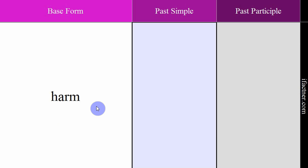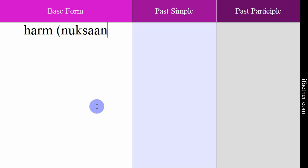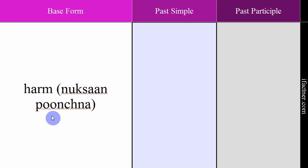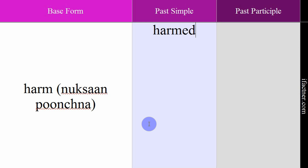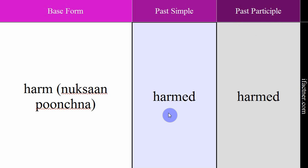The next verb is 'harm', meaning nuksaan puncha na — to harm or cause damage. Example: 'He harms animals.' — Woh janweron ko nuksaan punchata hai. Past simple form: harmed. Past participle form: harmed. Past simple: 'The thieves harmed the citizen.' — Choron ne shehri ko nuksaan puncha ya. Past participle: 'They haven't harmed him.' — Unhone us ko nuksaan nahi punchaya hai. Verb: harm. Meaning: nuksaan puncha na. Past simple: harmed. Past participle: harmed.